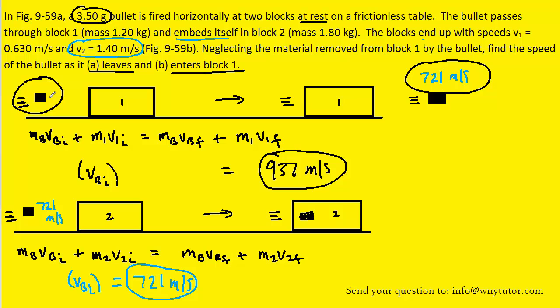Well, that was the initial velocity of the bullet from the first collision. That's what we found right here, the initial velocity of the bullet right before it collided with block 1.